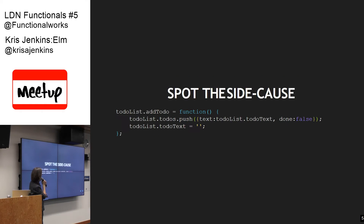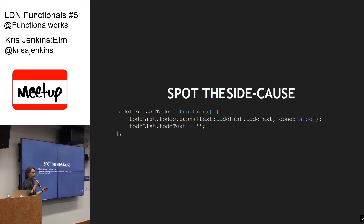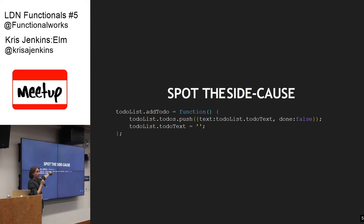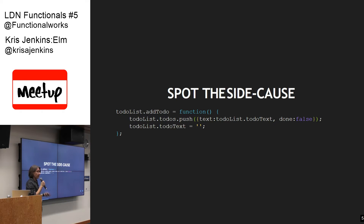Here's another example — spot the side effect. This function doesn't return anything. Whenever a function doesn't return anything, it's giving you nothing back. So what's the point of calling it? There's no point in calling a function that gives you nothing — you've already got nothing — unless there are side effects. A function that returns nothing can only be called for its side effects. You can always just look at the return value and the arguments to spot hidden side effects and side causes. It's an easy way to see it.